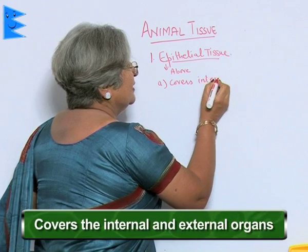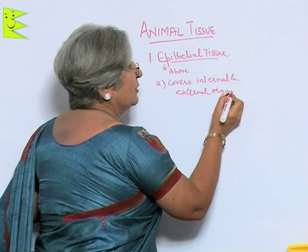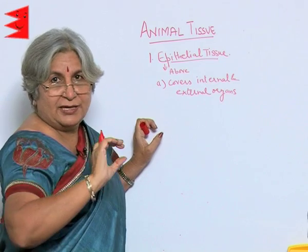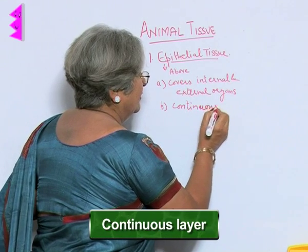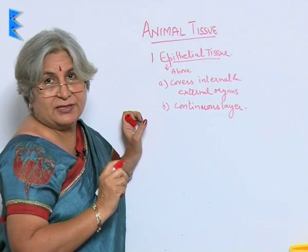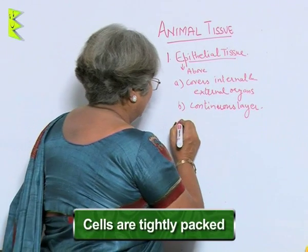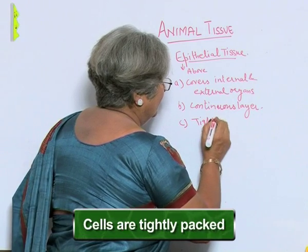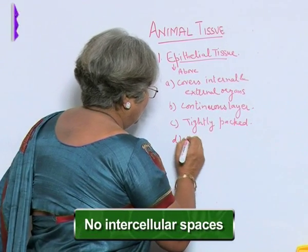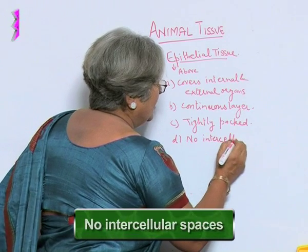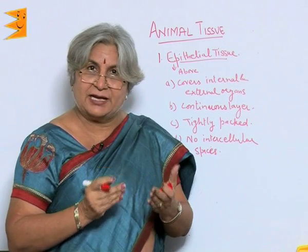Because epithelial tissue is a covering tissue, its protection has to be complete, so it is a continuous layer. If there were gaps between the cells, the protection would not be as good. Therefore, the cells are tightly packed with no intercellular spaces. But if it is so tightly packed, then movement of materials would not take place.